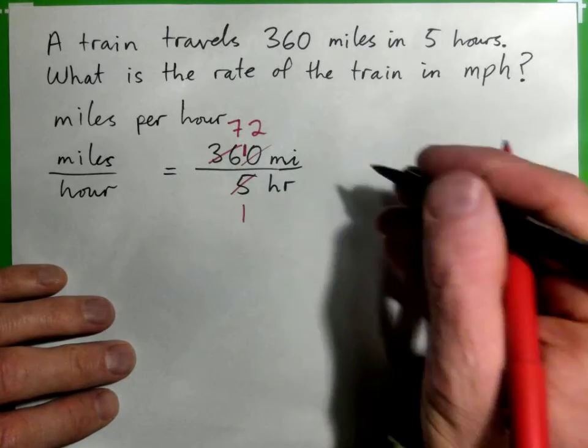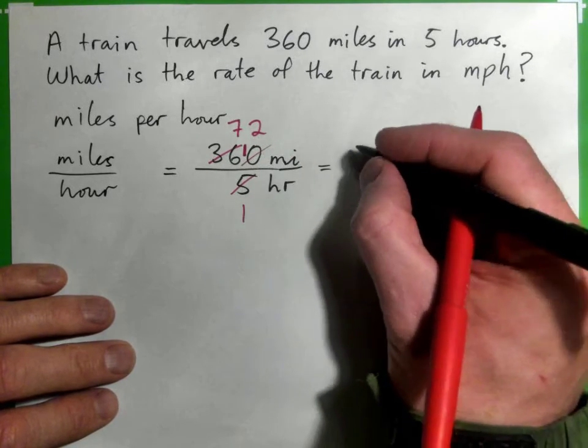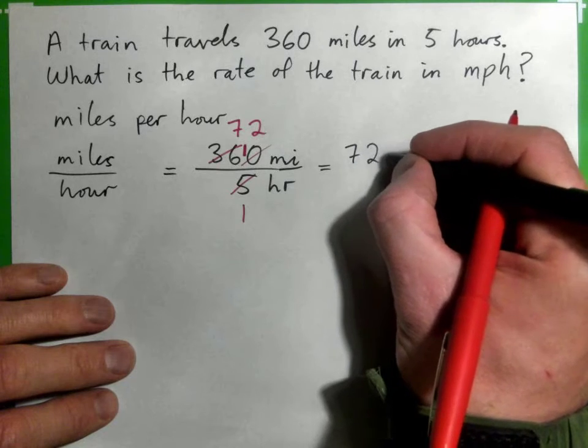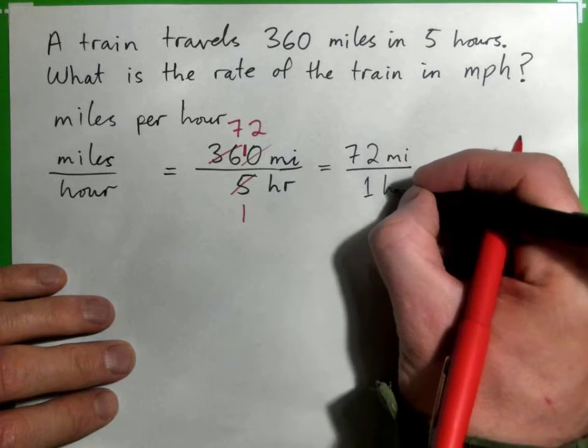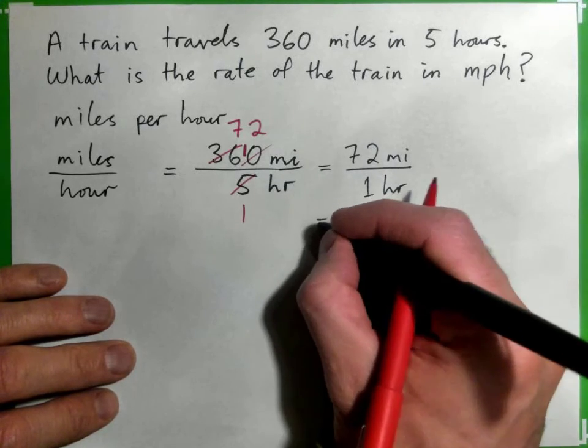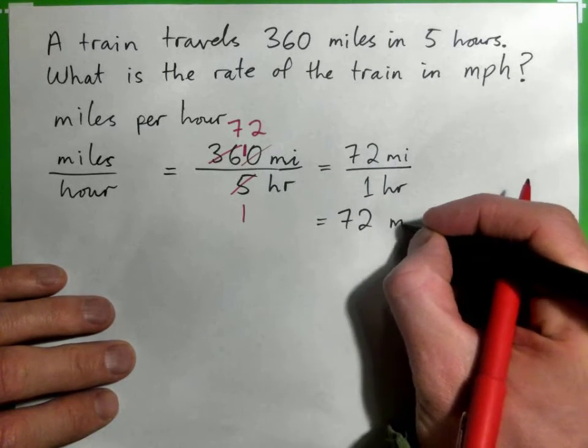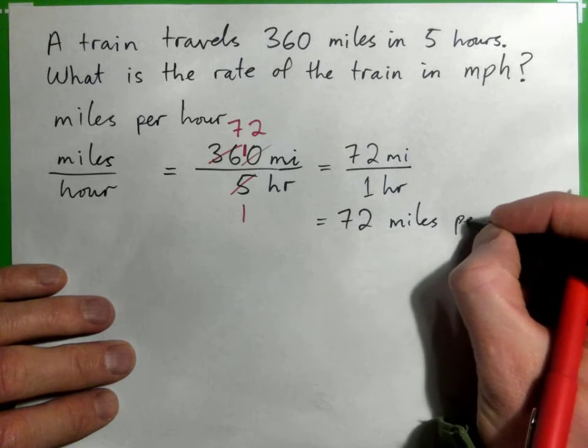So 360 miles in 5 hours is actually the same thing as 72 miles in 1 hour.